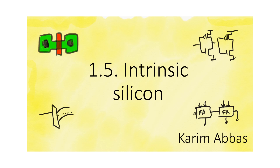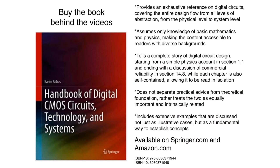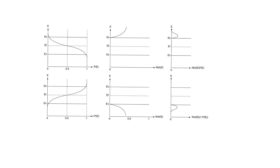We are starting to develop an understanding of how to calculate carrier concentrations in silicon. Let's perfect that by looking specifically at pure silicon — silicon that has no impurities in it. We concluded that the concentration of charge carriers, and we have two types: holes and electrons, can be calculated by multiplying the density of states available in each of the bands by the probability that there are electrons in these bands.